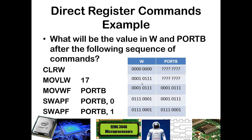And we're back. Here is the table of values. The CLRW command clears out W, so the value in W goes to 0. At this point we don't know what's in port B, so we indicate that with question marks. Then we are moving literal 17 into W — in this case that's hexadecimal 17, so we see that indicated here.